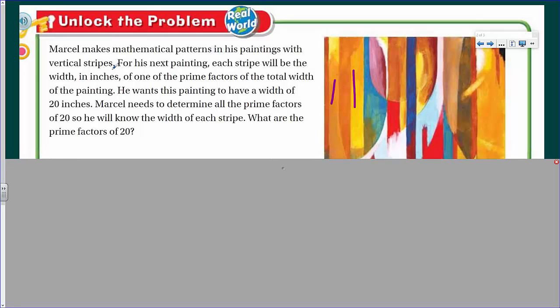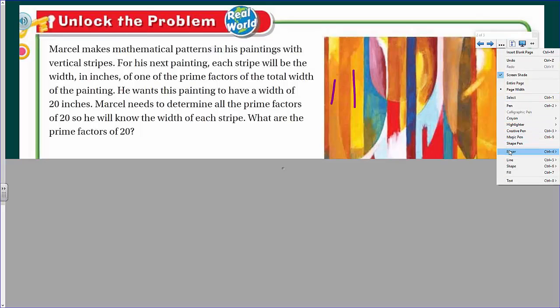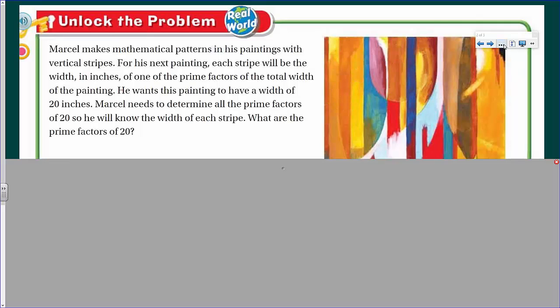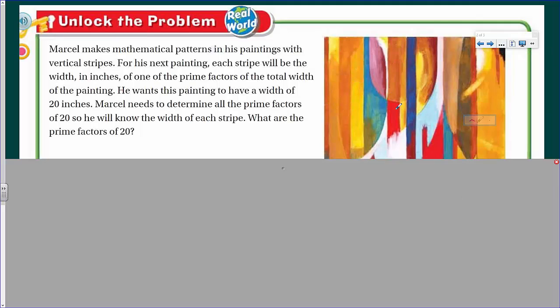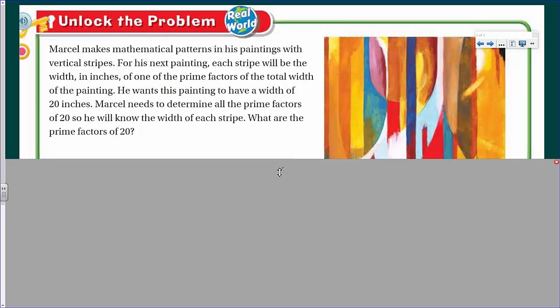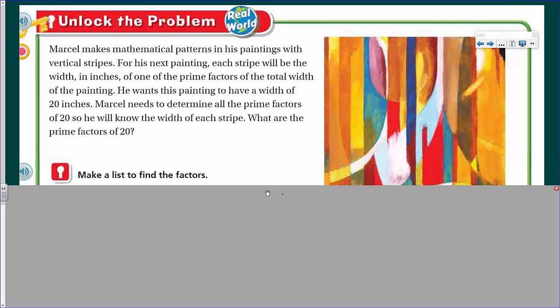Okay, we have a word problem. It says we have to unlock the problem. This says this is real world. It says, Marcel makes mathematical patterns in his paintings with vertical stripes. So, for his next painting, it says each stripe will be the width in inches of one of the prime factors of the total width of the painting. You can see where that gets confusing. He wants his painting to have a width of 20 inches. Marcel needs to determine all the prime factors of 20 so he will know the width of each stripe.